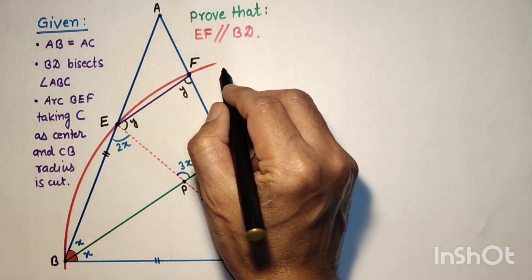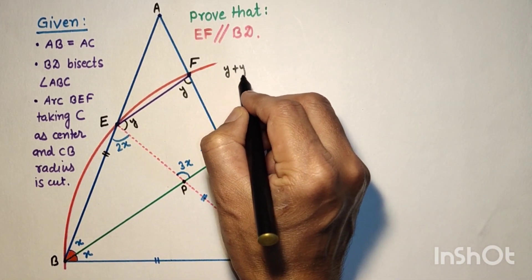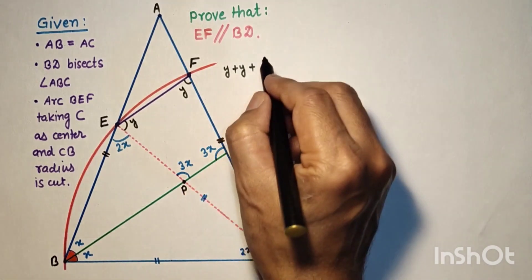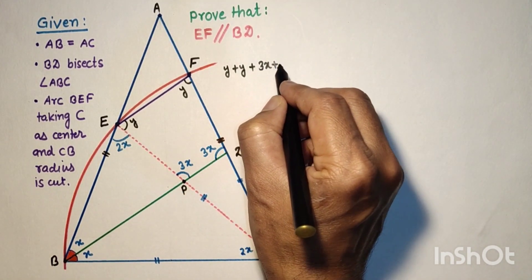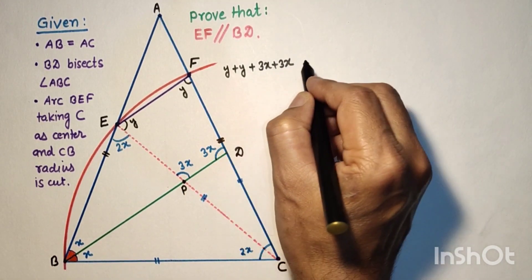So from here, Y plus Y plus 3X plus 3X equals 360.